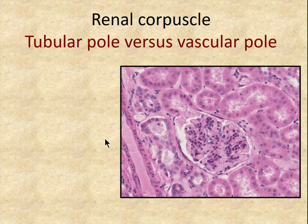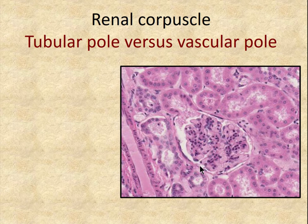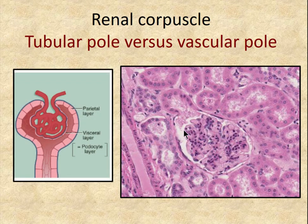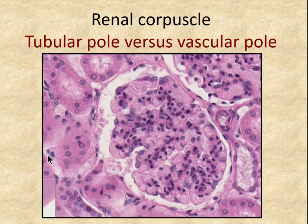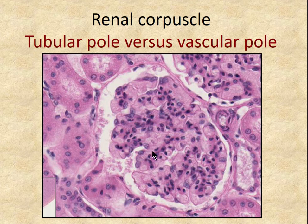The renal corpuscle has a tubular pole and a vascular pole. The tuft of glomeruli sits in the center surrounded by Bowman's capsule — the visceral layer directly on the glomerular capillaries, the parietal layer on the outside, with urinary space in between. The tubular pole is where the urinary space becomes continuous with the proximal convoluted tubule. The vascular pole is where a small afferent arteriole enters, visible with a red blood cell inside.